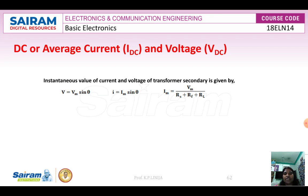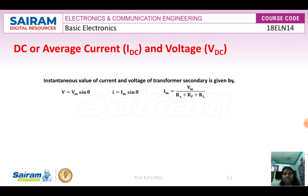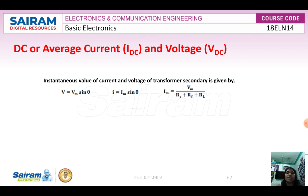In the half wave rectifier circuit we are using a transformer as the source, where source resistance is represented by RS. We are using a single diode, so the forward diode resistance is represented by RF, as well as the load resistor RL. Therefore Im is equal to Vm divided by RS plus RF plus RL.